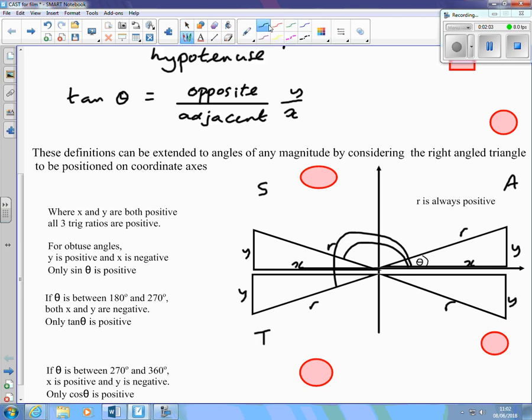Finally, looking at reflex angles, which are bigger than 270 degrees, x is now positive again, but y is negative. So cosine, x over r, is positive. Sine, y over r, is negative. The only one that's positive in this quadrant is cosine.